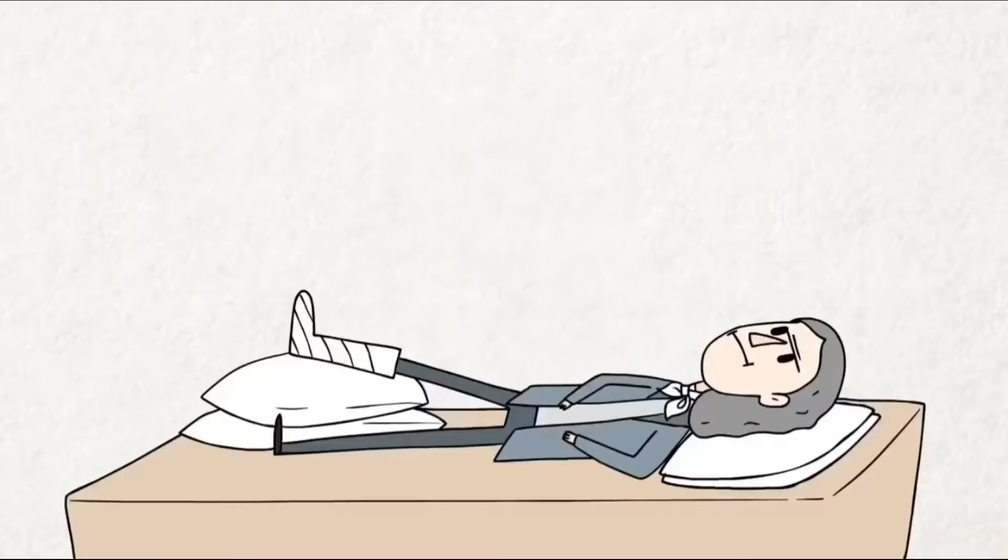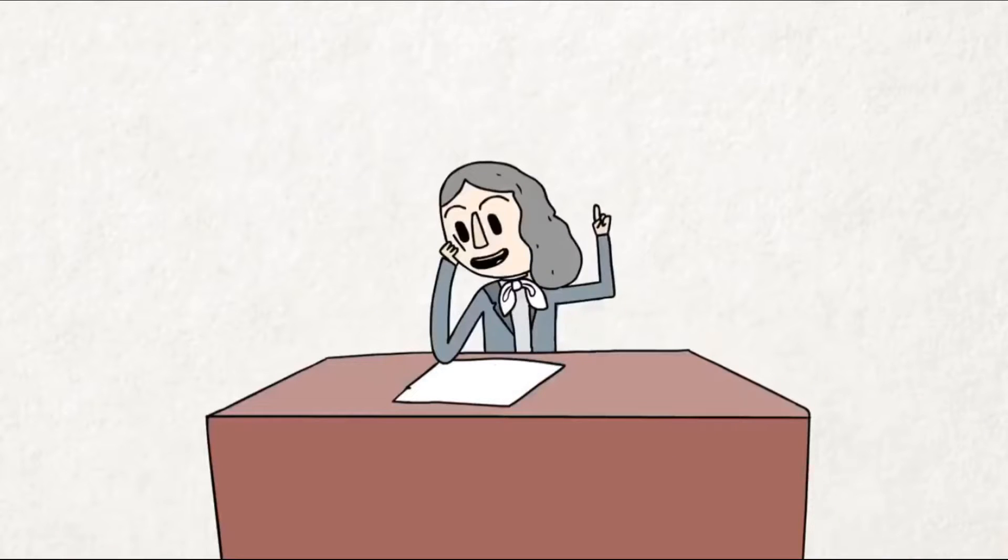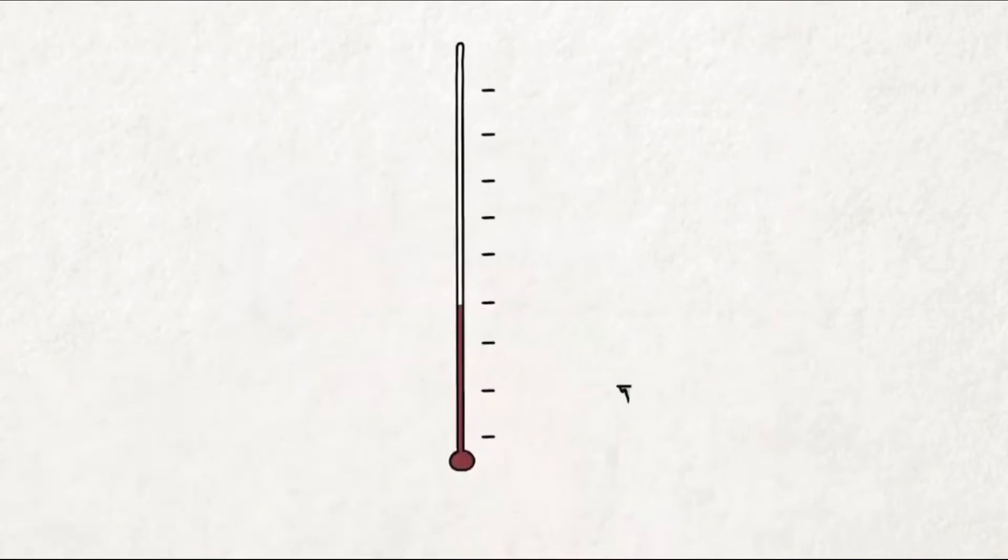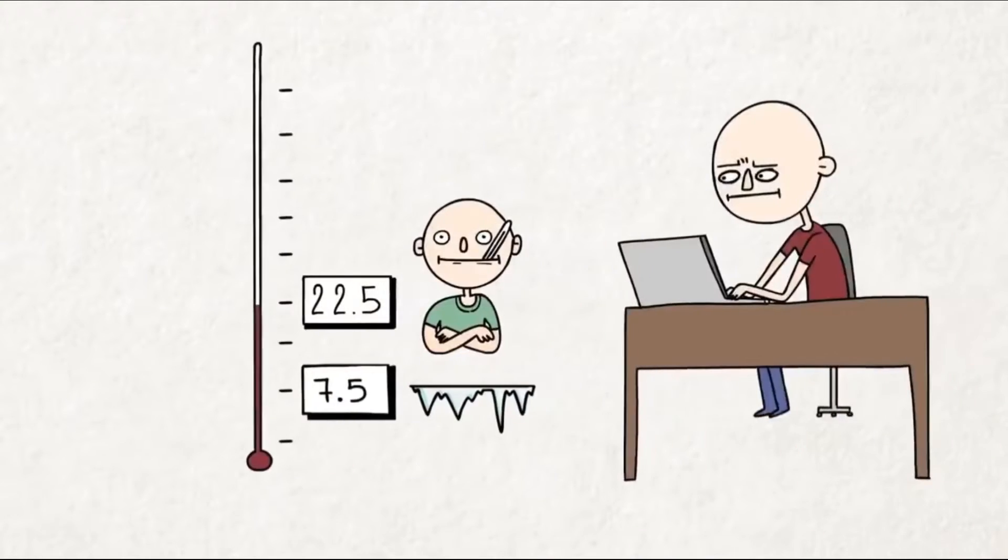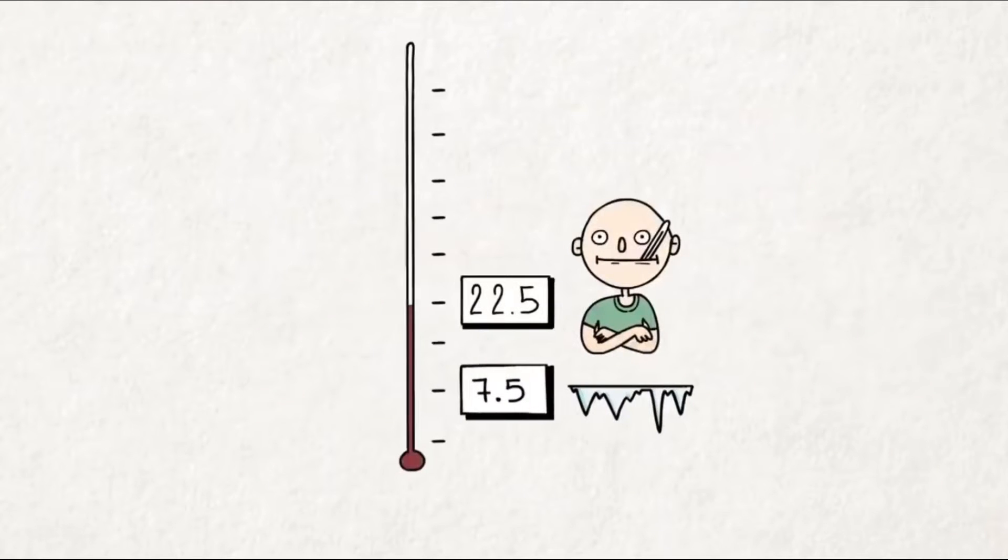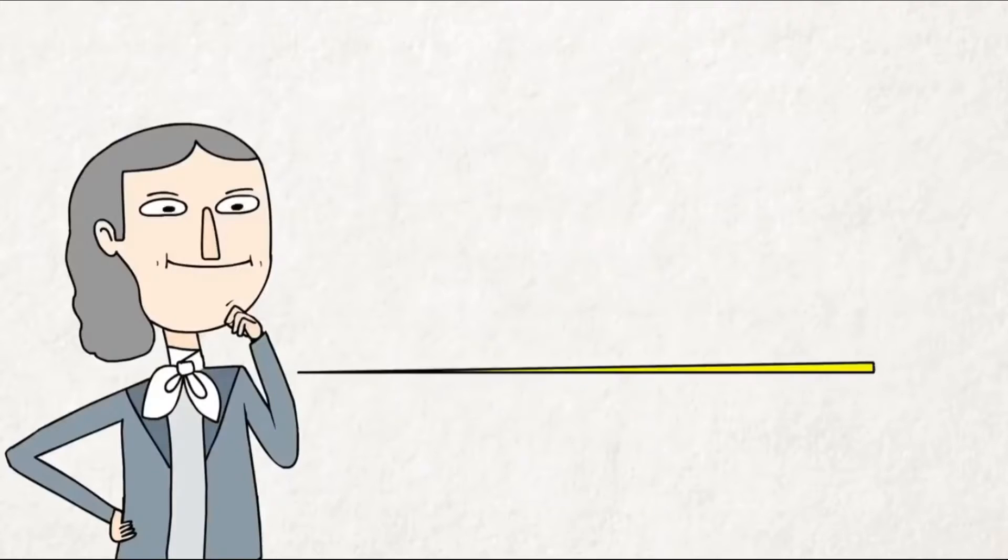In 1702, Romer was housebound after breaking his leg. And to pass the time, he devised a brand new temperature scale, with the freezing point of water at 7.5 degrees and body temperature at 22.5 degrees. Now, this might seem odd until you consider that Romer wanted the boiling point of water to be 60 degrees. As an astronomer, he had experience dividing things by 60.